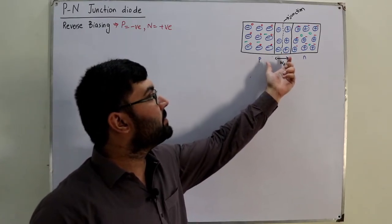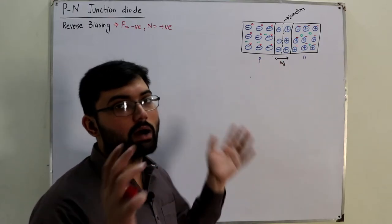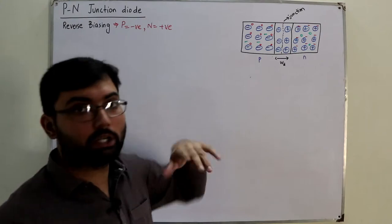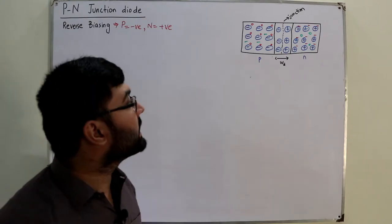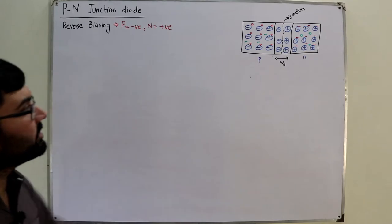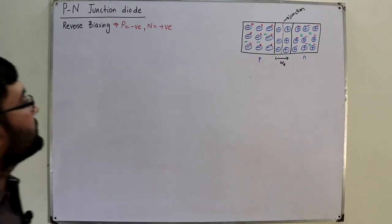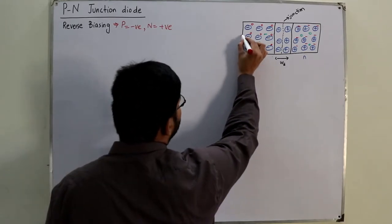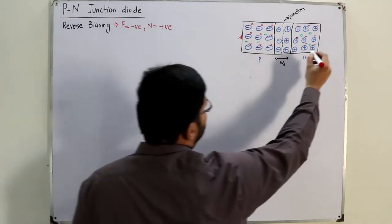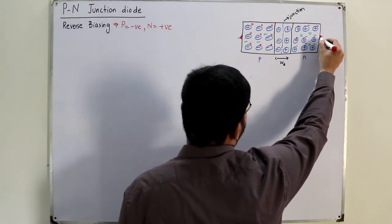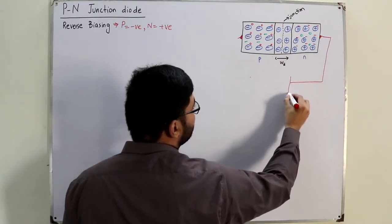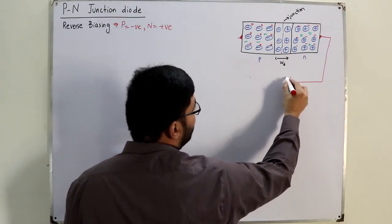You have a depletion region which has been depleted of free charge carriers, an electric field developed, a barrier potential, and a junction in between the P and N sides. Now you make aluminum — most probably metallic — contacts.